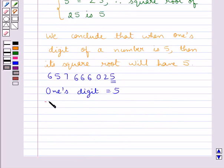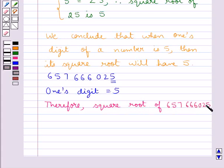Therefore, we can say that square root of 657666025 will have 5 in one's digit. And so our final answer is 5.